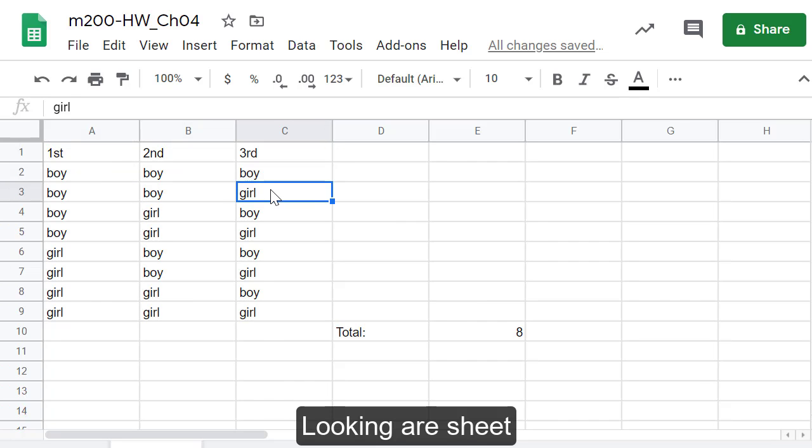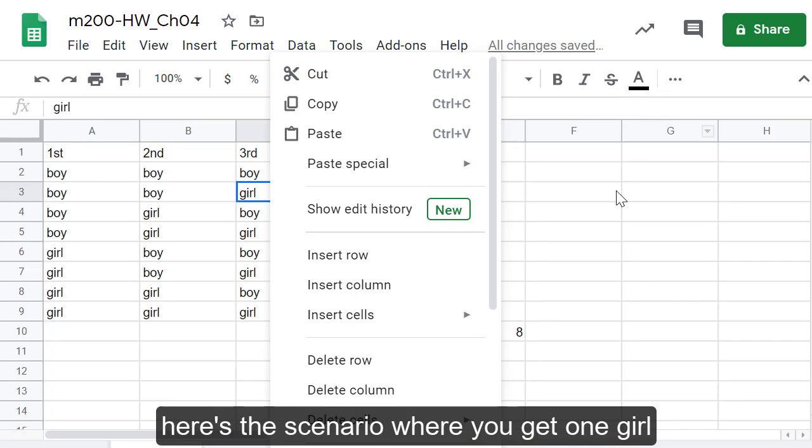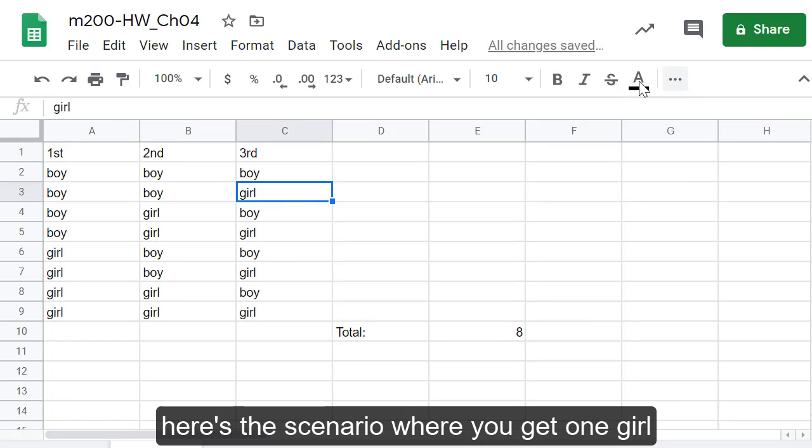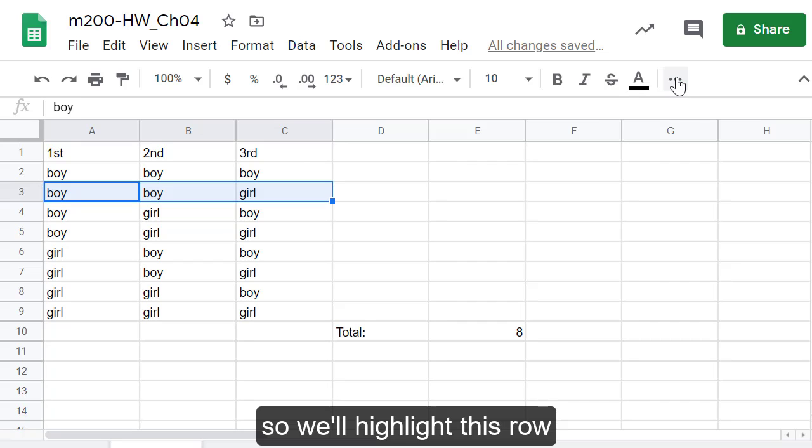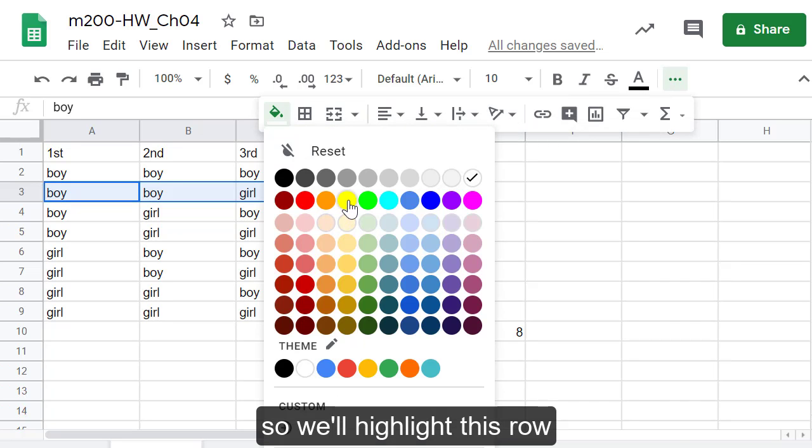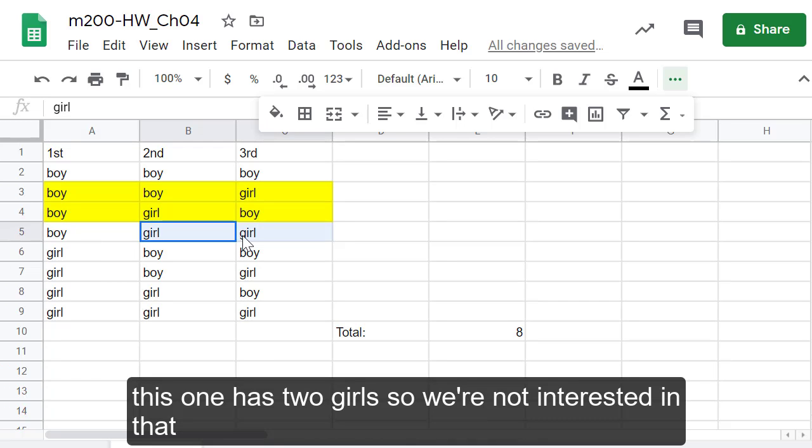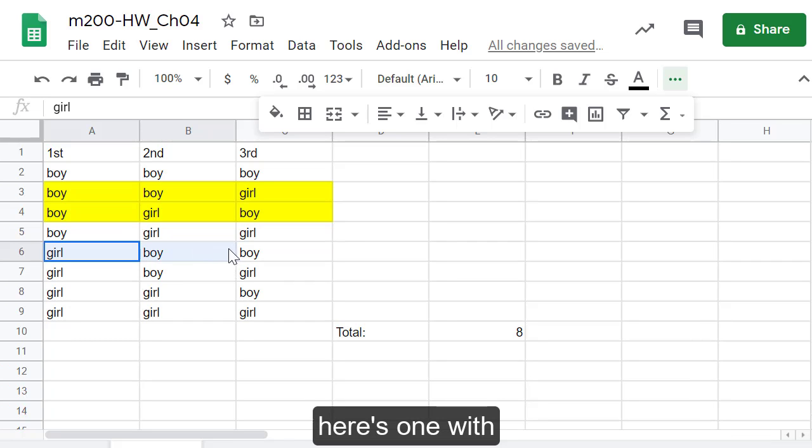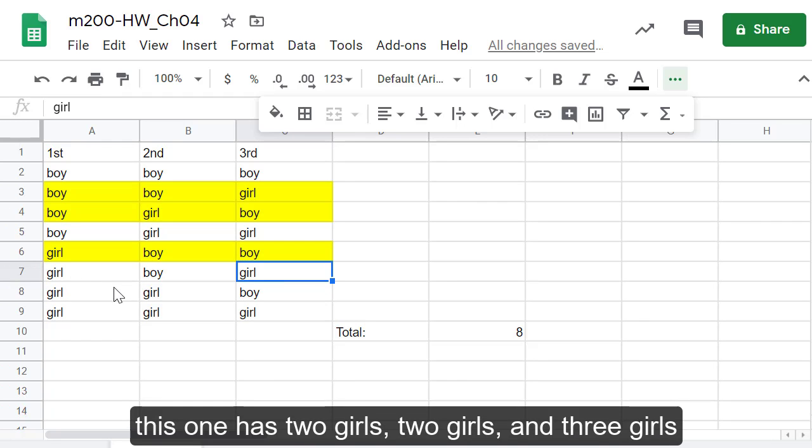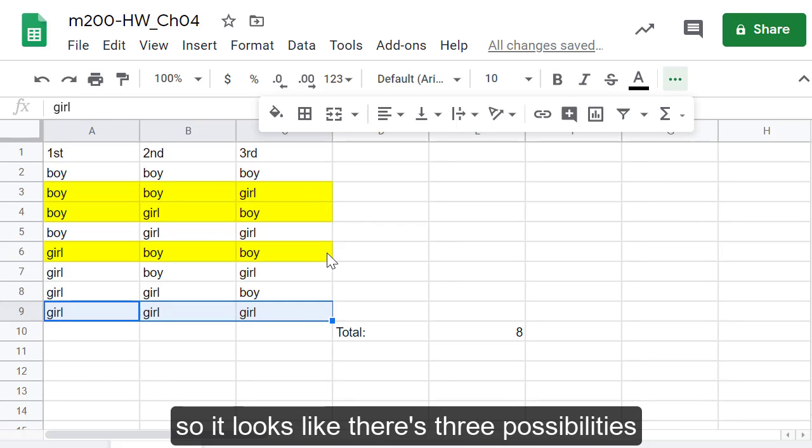Looking at our sheet here is the scenario where you get one girl. So we'll highlight this row. Here's another scenario where we get one girl. This one has two girls so we're not interested in that. Here's one with only one girl. This one has two girls, two girls, and three girls. So it looks like there's three possibilities where you would have exactly one girl.